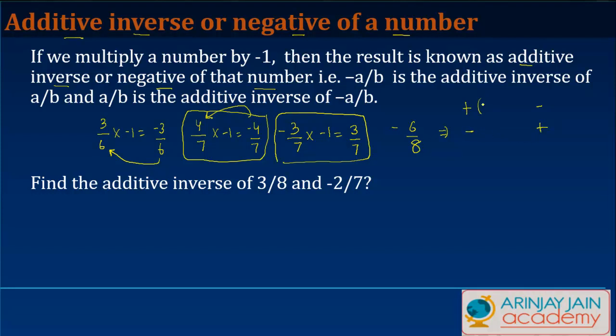So find the additive inverse of 3/8. 3/8 into minus 1 gives me minus 3/8. So minus 3/8 is the additive inverse of 3/8. Minus 2/7 into minus 1 gives you 2 upon 7. 2 upon 7 is the additive inverse of minus 2/7, and that's your answer.